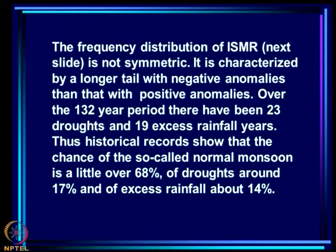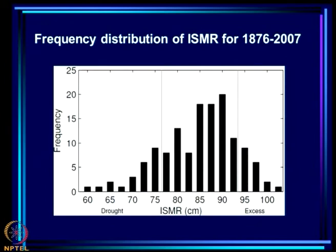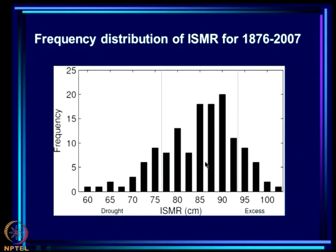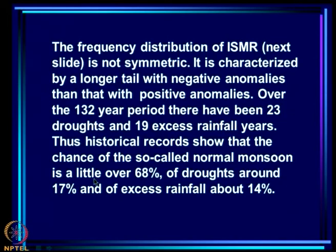Now the frequency distribution of ISMR is not symmetric. This shows what is the percentage of years in which the rainfall is around 85, around 87.5, around 90, and so on, based on data from 1876 to 2007. The frequency distribution has a very long tail towards the lower rainfall region compared to the high rainfall region. High rainfall ends fairly sharply, but there is a long tail on the deficit side. It is characterized by longer tail with negative anomalies than with positive anomalies.